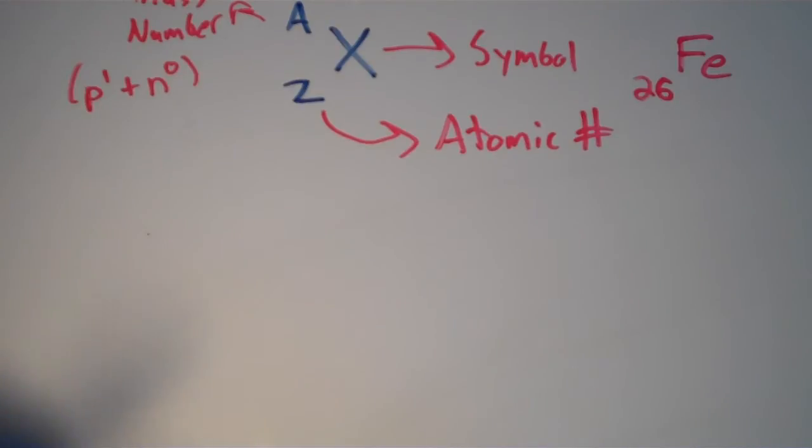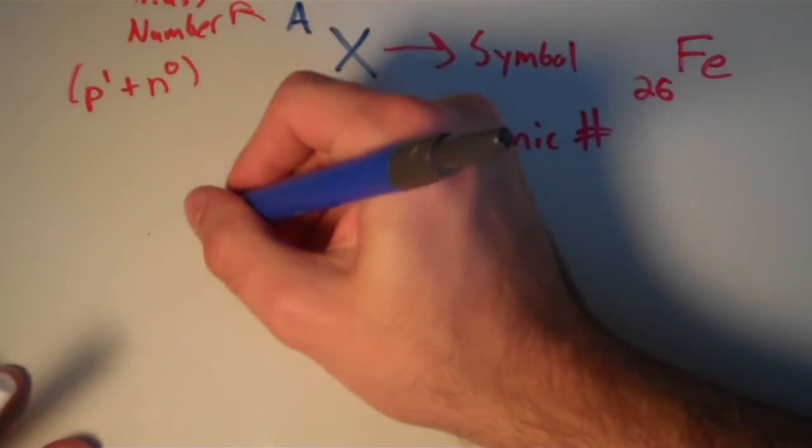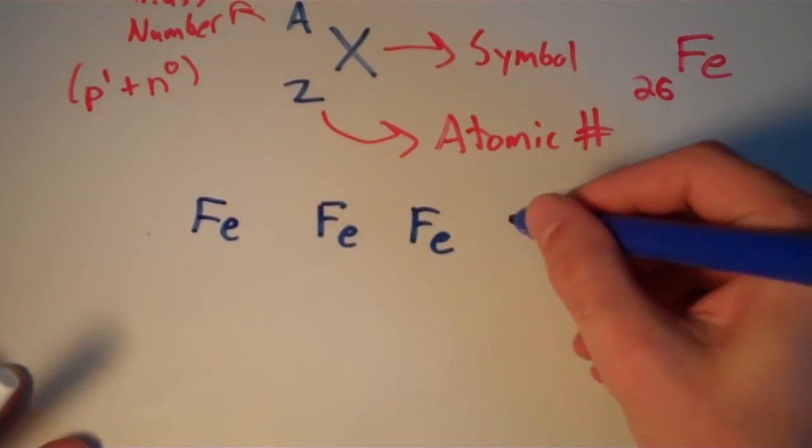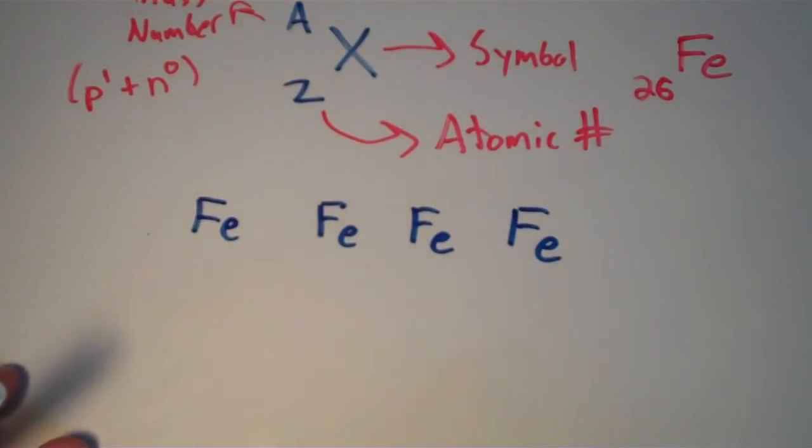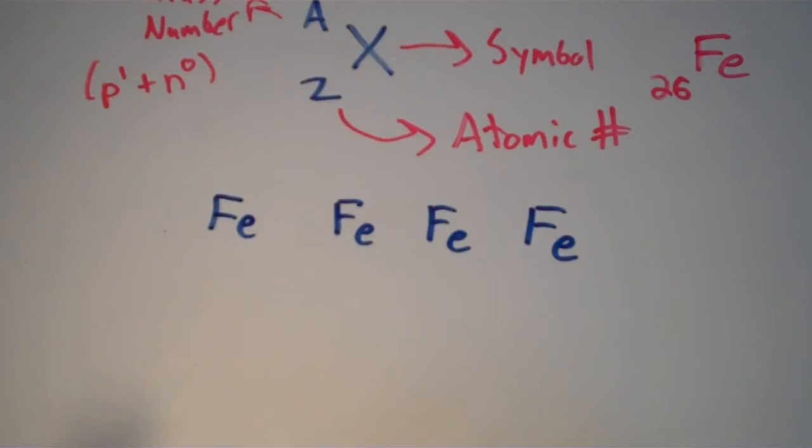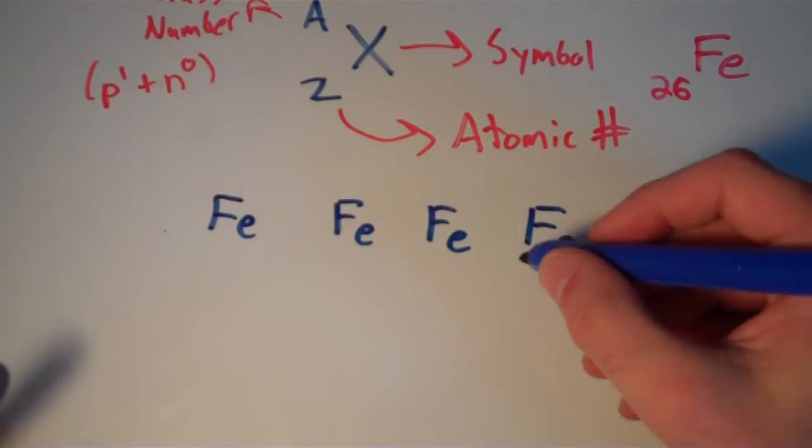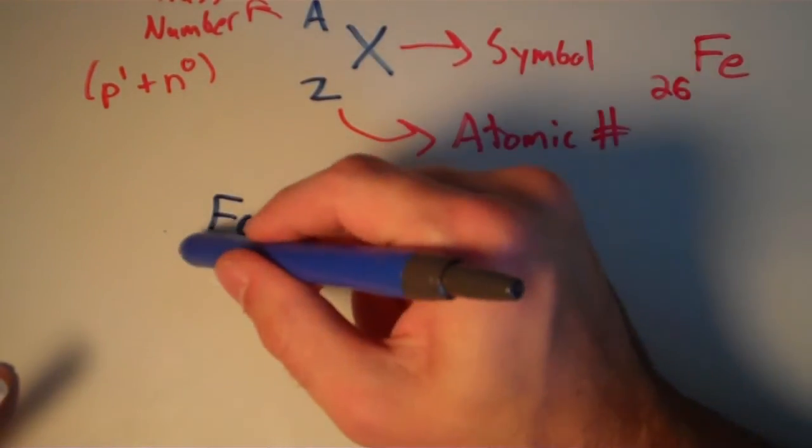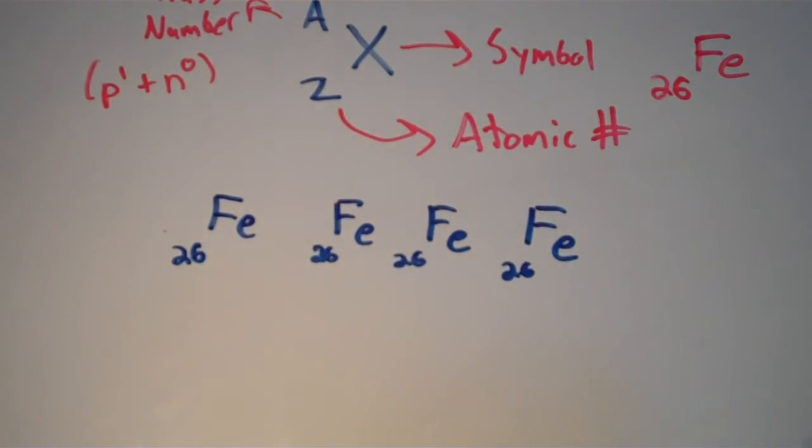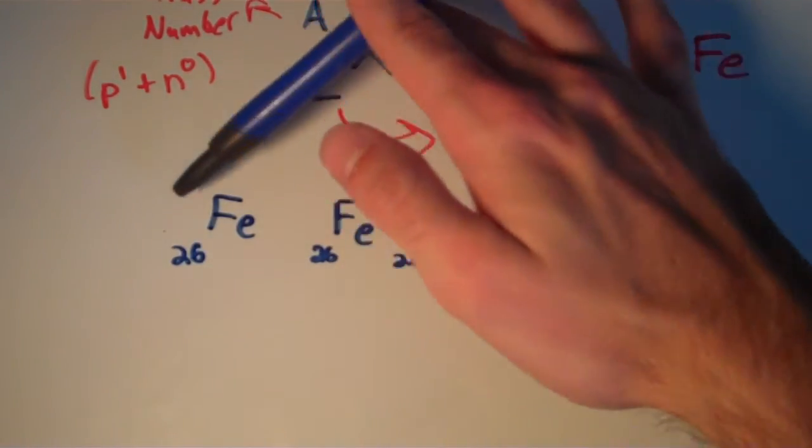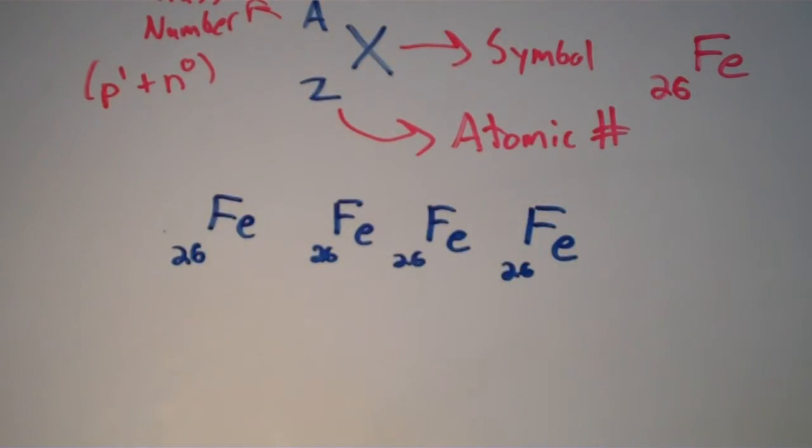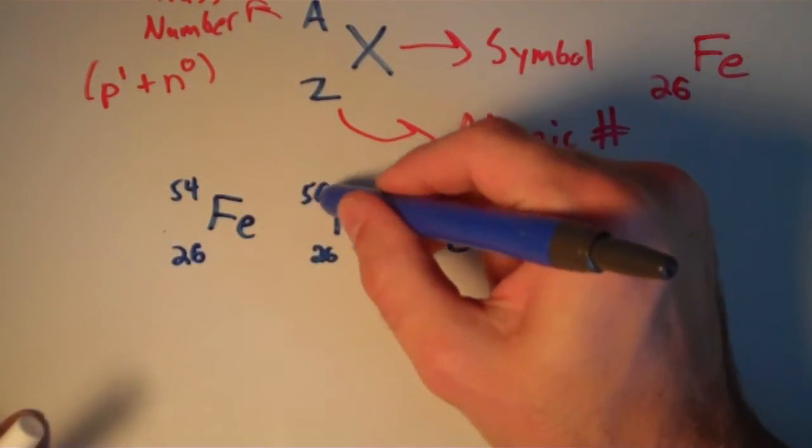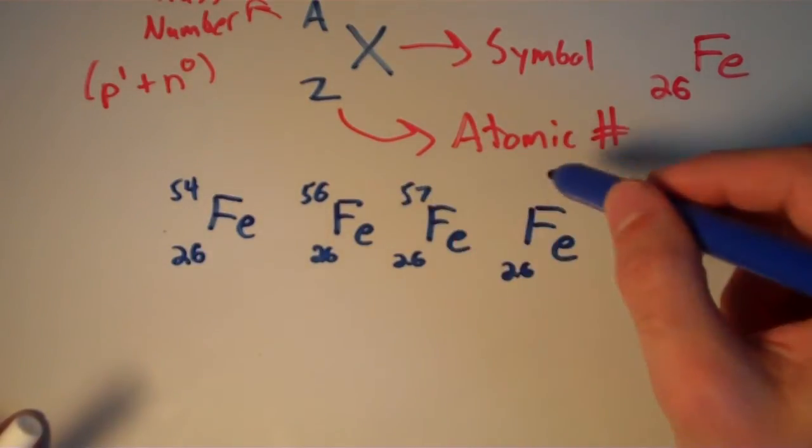So let's go ahead and just write down the four isotopes of iron real quick. And the four isotopes of iron look like this. So we have, since they're the same element, the chemical symbols are always going to be the same. And the atomic numbers are going to be the same too, so I'll just go ahead and put a 26 everywhere. But our mass numbers are going to be different. And the four naturally occurring isotopes of iron have mass numbers of 54, 56, 57, and 58.